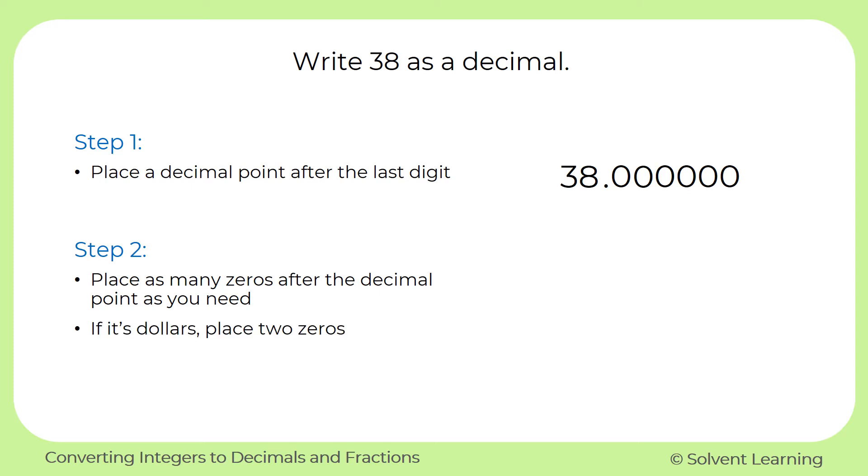If you're working with dollars, it's best to place two zeros after the decimal point. So if we have $38 and we want to show two places after the decimal point to represent the cents that go with the dollars, we would write 0.00.